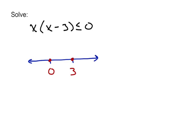If I pick something very negative like negative a billion, negative a billion is negative, and negative a billion minus 3 is also negative. So we take a negative times a negative, and every value on that interval will be positive. If we pick something in between 0 and 3, like 1, then 1 is positive but 1 minus 3 is still negative — that product is negative. Finishing off by picking something very positive like positive a billion: positive a billion times positive a billion minus 3 gives positive times positive, which is positive.